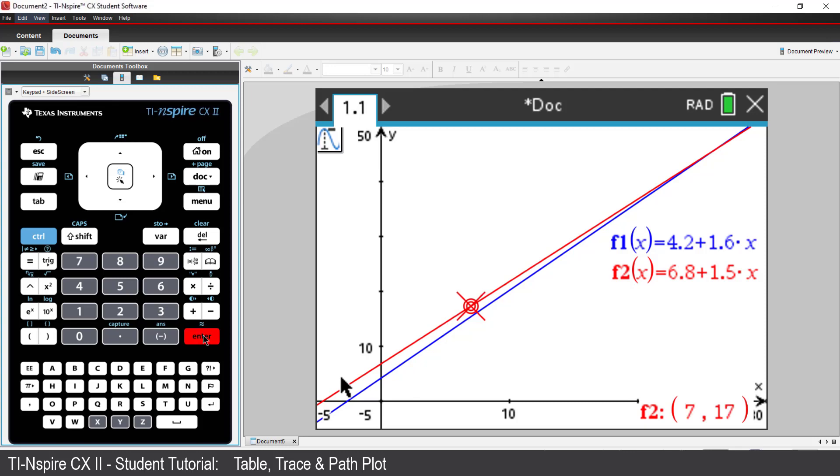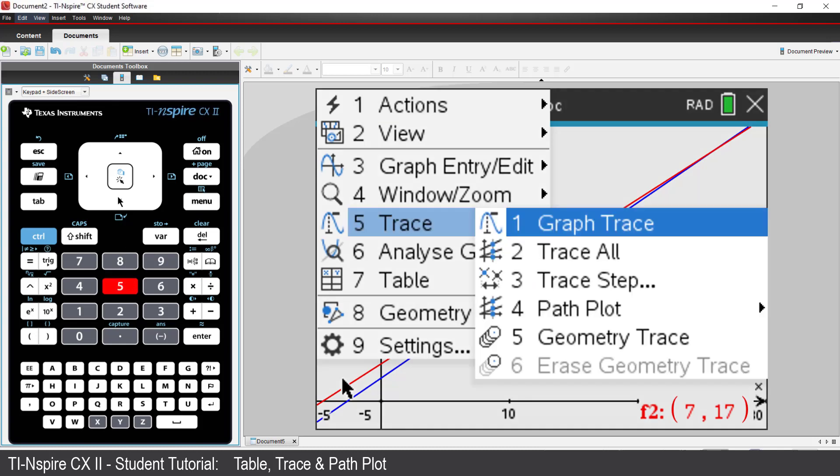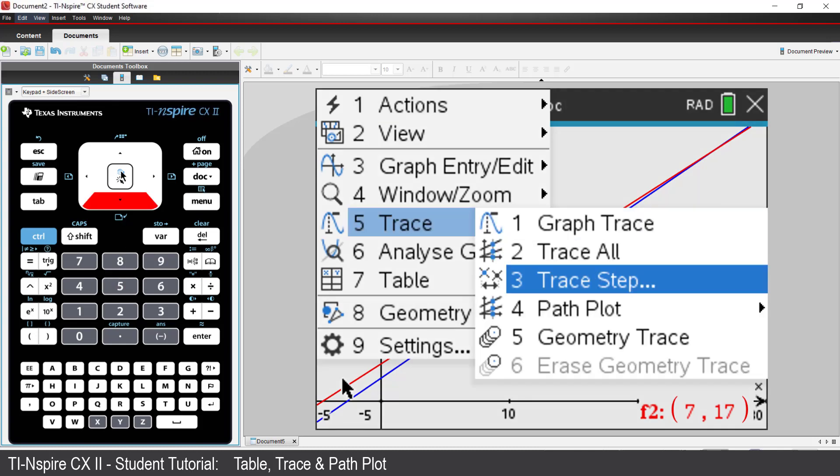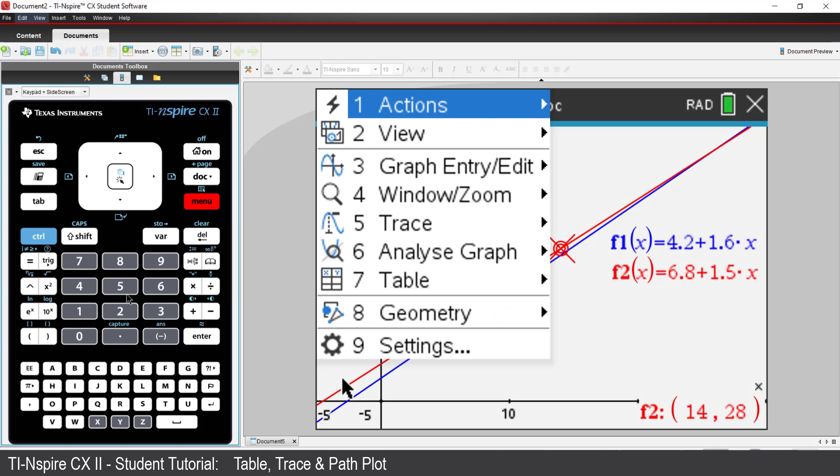You can also adjust the step increment by pressing Menu, select Trace, followed by Trace Setup. You can do a comparison of two fares by selecting Trace All.